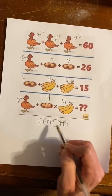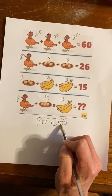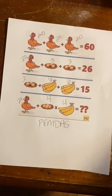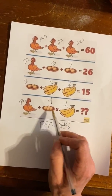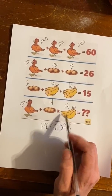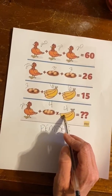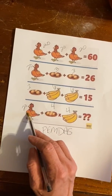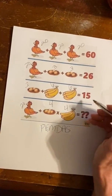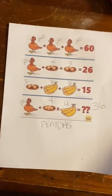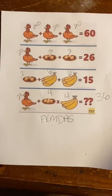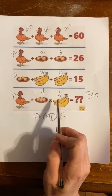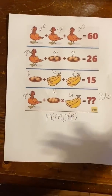That means you do your multiplication first: 4 times 4 equals 16, then 16 plus 20 equals 36. And there's your answer — chicken plus eggs times bananas equals 36.